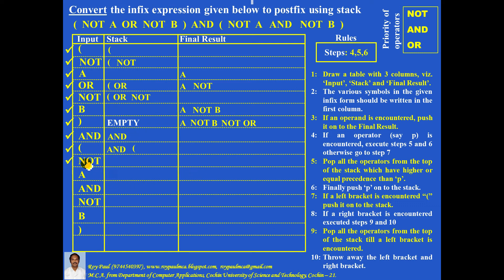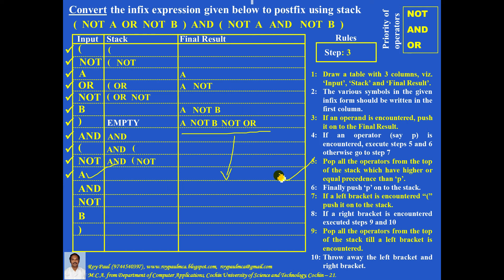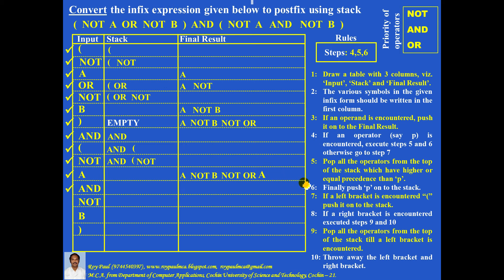An operator is encountered — two things. Step 5: the top of the stack contains the left bracket — it is not an operator — so step 5 is not needed. Step 6: push this NOT operator onto the stack. An operand is encountered — push it onto the final result. A comes here. An operator is encountered — two things. Step 5: the top of the stack contains NOT, which has higher precedence compared to AND, so NOT should be popped to the final result. After popping NOT, the top of the stack contains the left bracket — it is not an operator — so step 5 is over. Step 6: push this AND operator onto the stack.